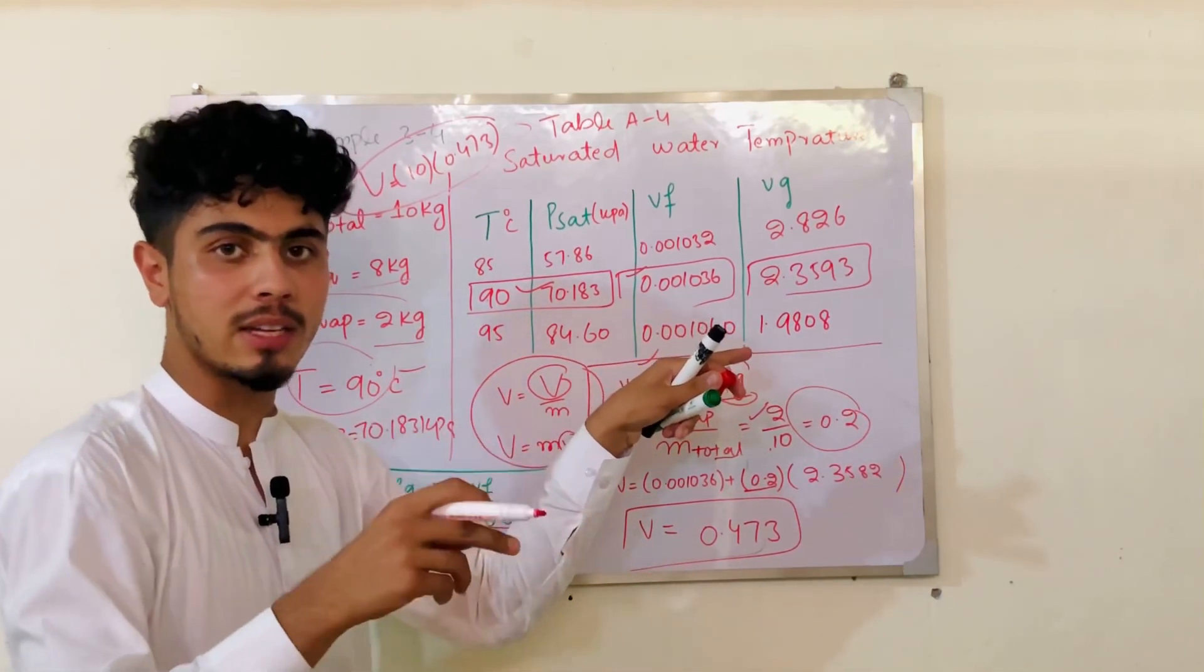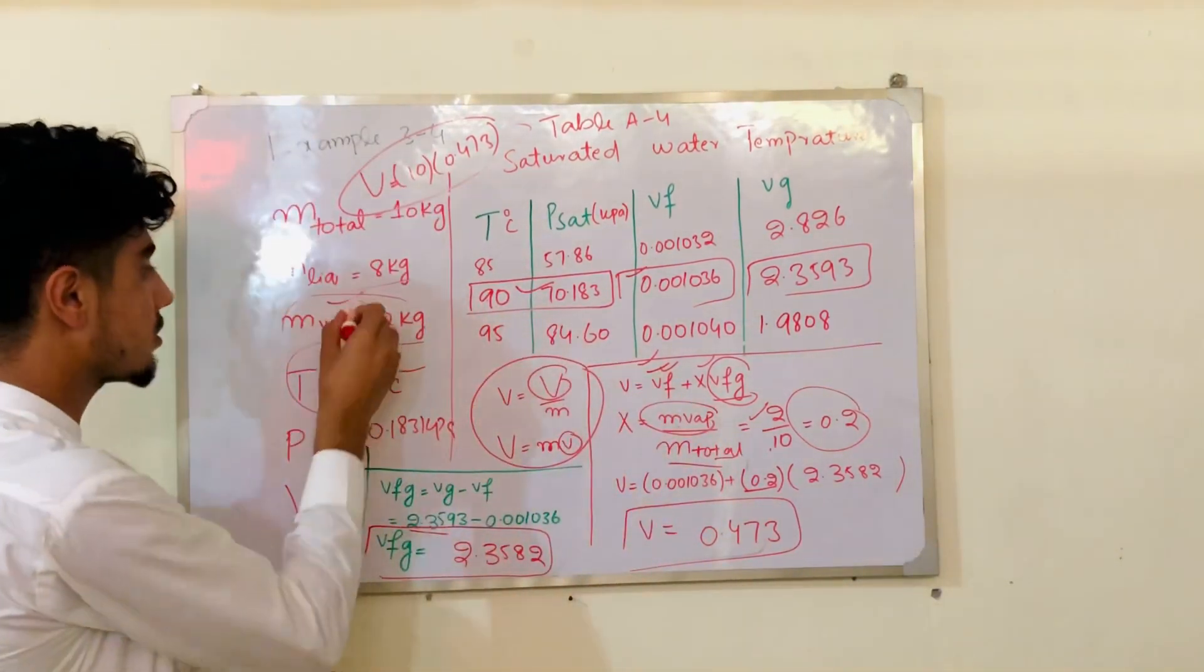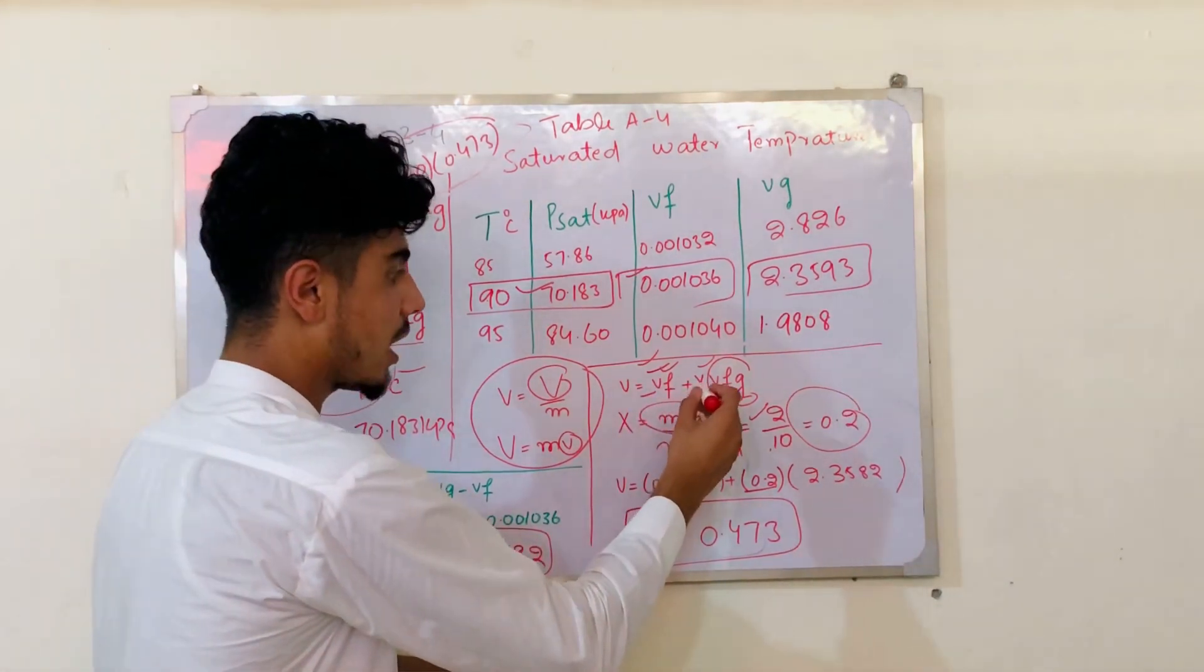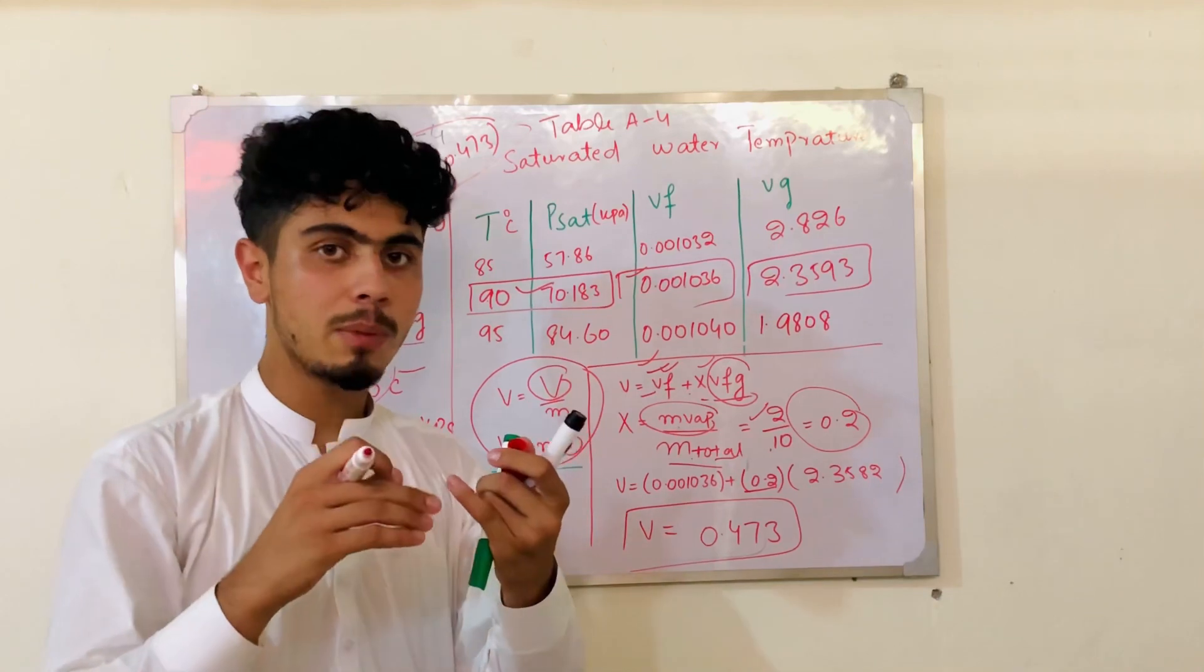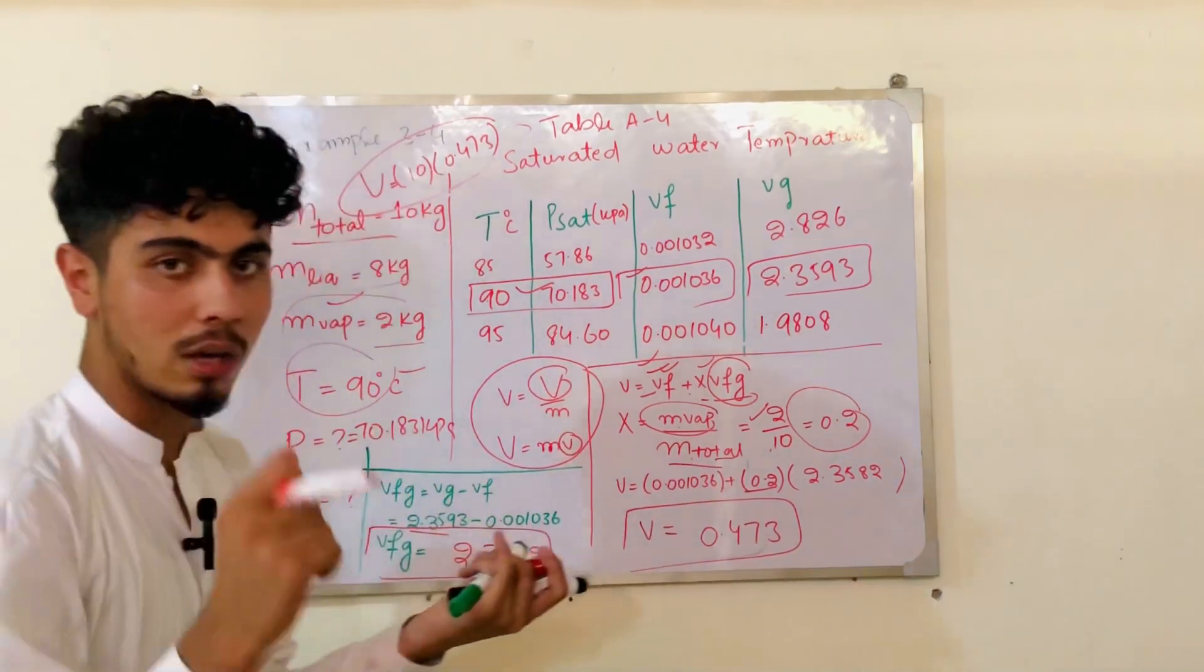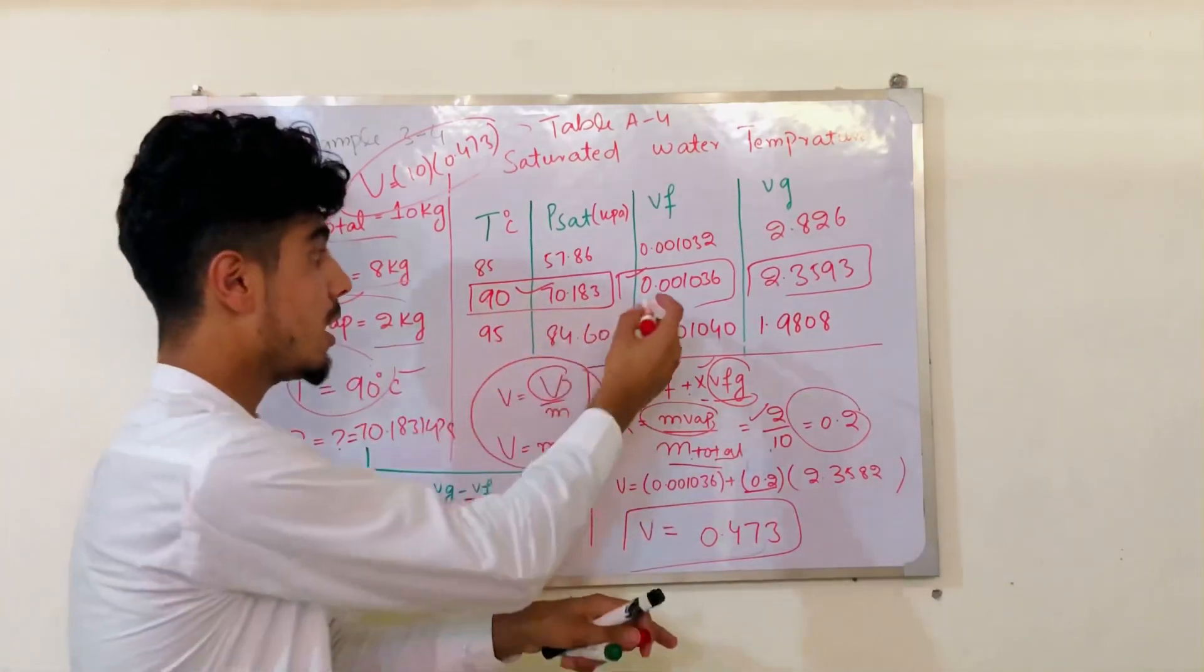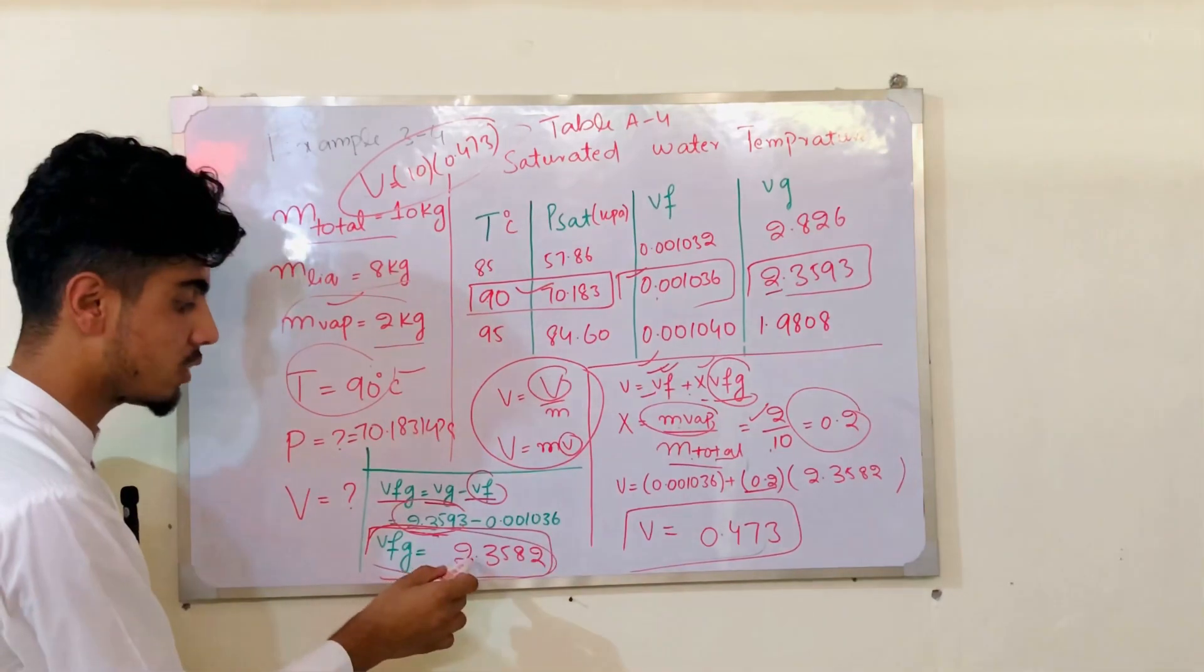We need to find X, which is the quality. Quality equals mass of vapor divided by total mass. From the property tables at 90°C, we look up Vf which is 0.001036. Vfg equals Vg minus Vf.